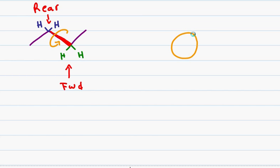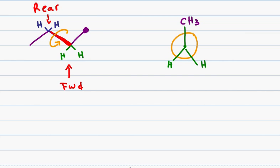So I will start with the circle. For the forward carbon, I have two green hydrogens going down, so I draw one to the left and one to the right, downward. And I have a CH3 group in the up position. The rear carbon isn't shown, but I do see two blue hydrogens in the up position, so I draw them up-left and up-right. And I have a methyl or CH3 group downward, so I draw that here. This is the standard Newman Projection for the butane molecule.